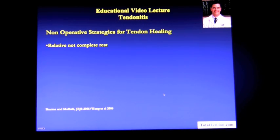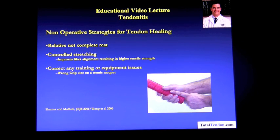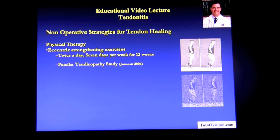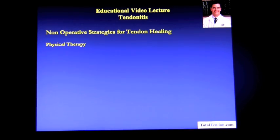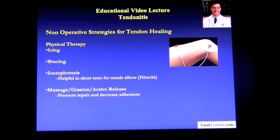Treatment options for tendon healing include relative but not complete rest, and controlled stretching, which improves fiber alignment and results in higher tensile strength so the tendon can withstand a greater load. You want to correct any training or equipment issues, such as the wrong grip size or too tight gripping with tennis or golf. Physical therapy has been shown to be effective if you use an eccentric strengthening program twice a day, seven days a week — a patellar tendonitis study used this effectively. Physical therapy also may use icing, bracing, iontophoresis, massage, grafts, and active release techniques to promote repair and decrease adhesions.